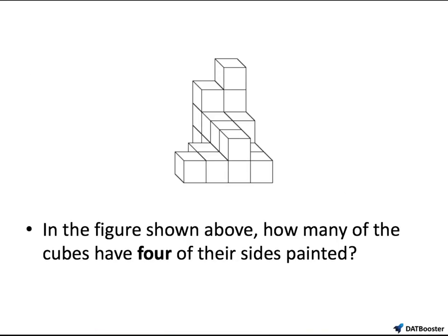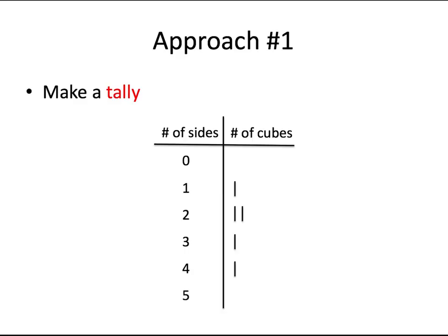Here's an example of what a question looks like in this section. In the figure shown above, how many of the cubes have four of their sides painted? Now, a very inefficient approach would be to get to a question, then go through all the cubes and count how many have four sides painted, then move to the next question and count again. That's not very efficient and wastes a lot of time.